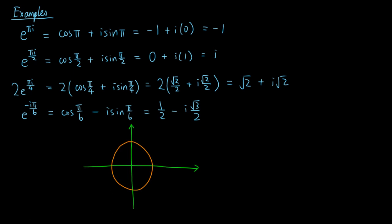We can visualize these complex numbers using the complex plane. For example, e to the πi is −1, which corresponds to the coordinate (−1, 0) on the Cartesian plane, so it is a point on the unit circle intersecting the negative real axis. Secondly, e to the πi/2 is i, which corresponds to the coordinate (0, 1), intersecting the positive imaginary axis.